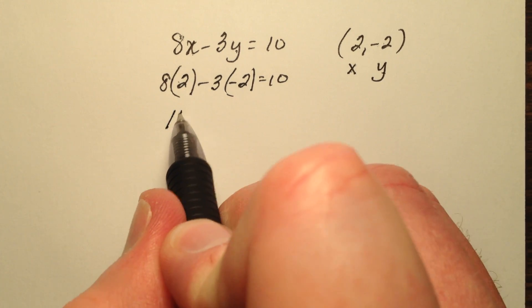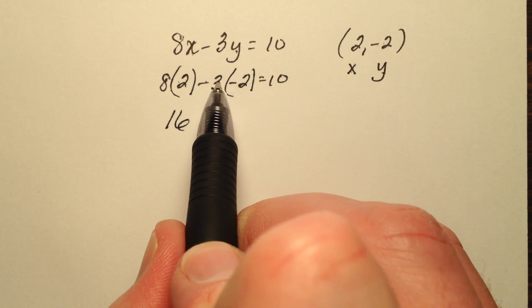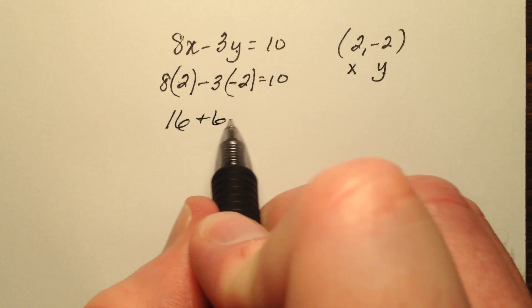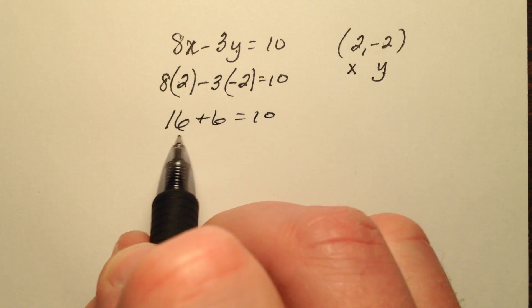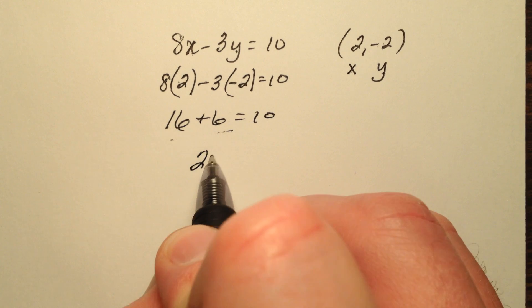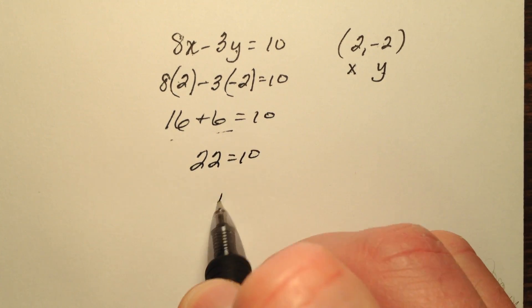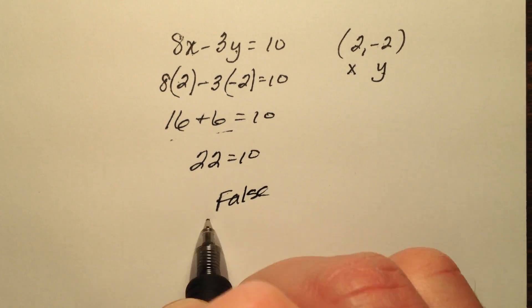So 8 times 2 is 16, negative 3 times negative 2 is positive 6 equals 10. So this left side becomes 22 equals 10, which is actually a false statement.